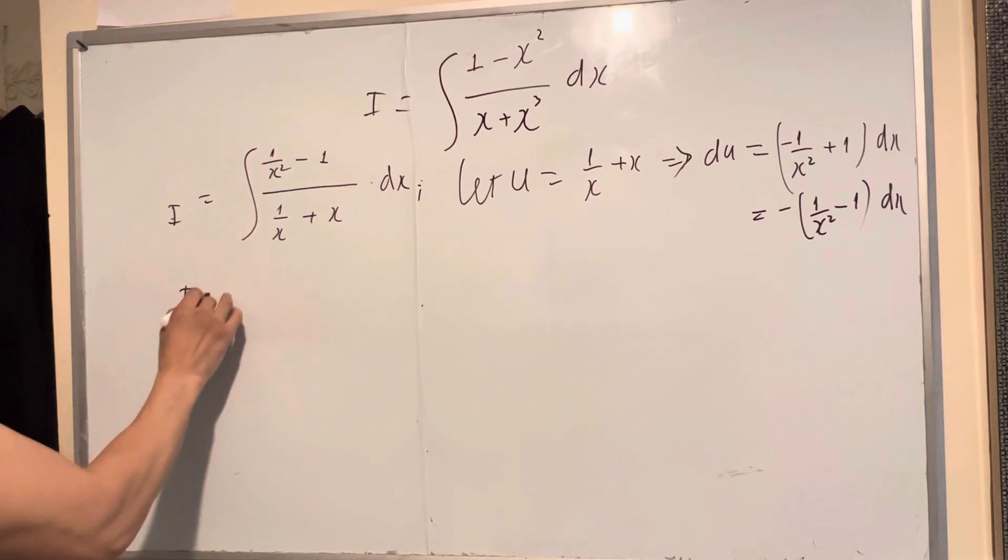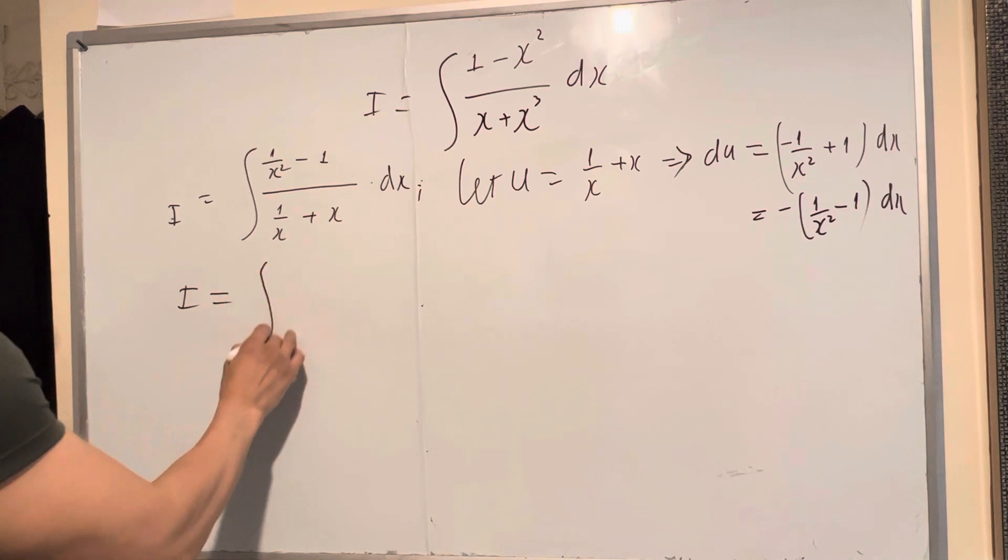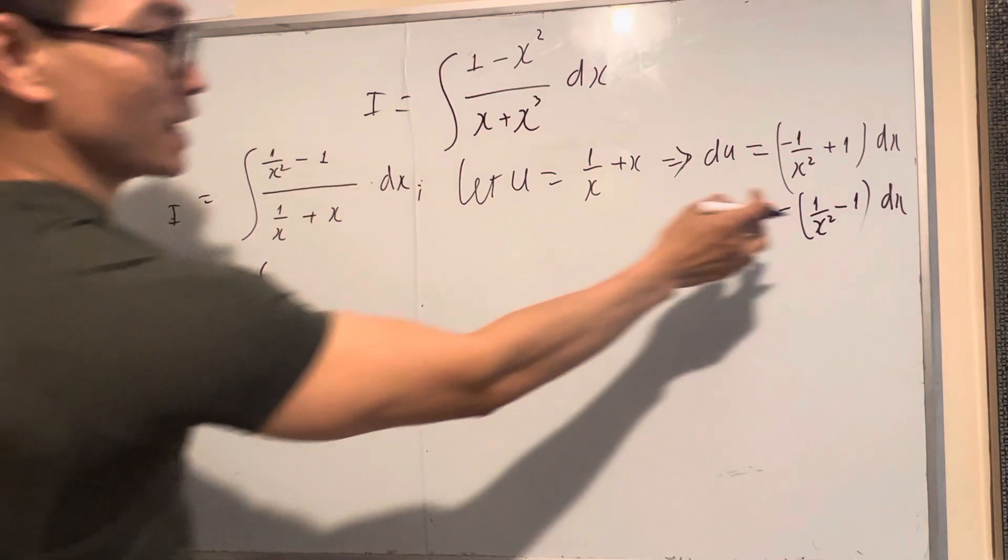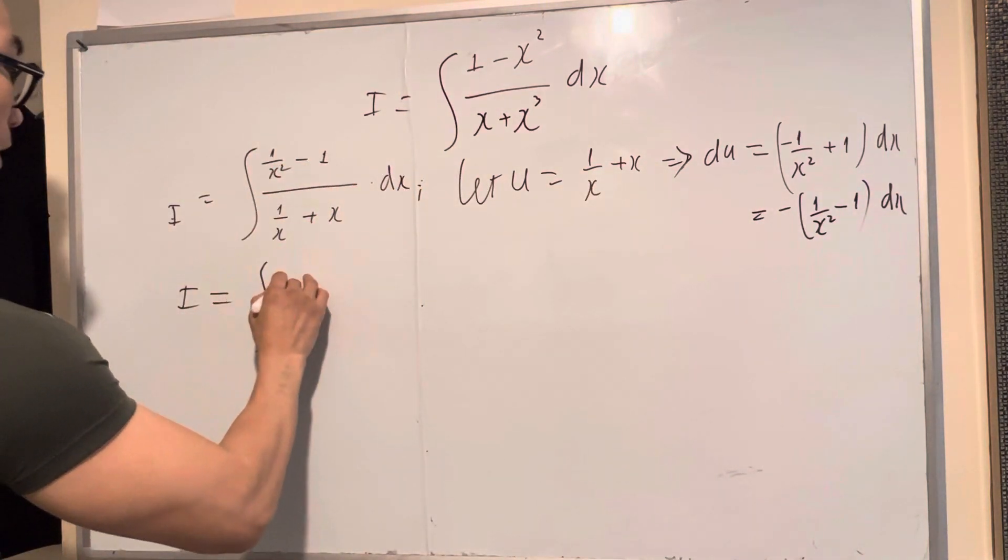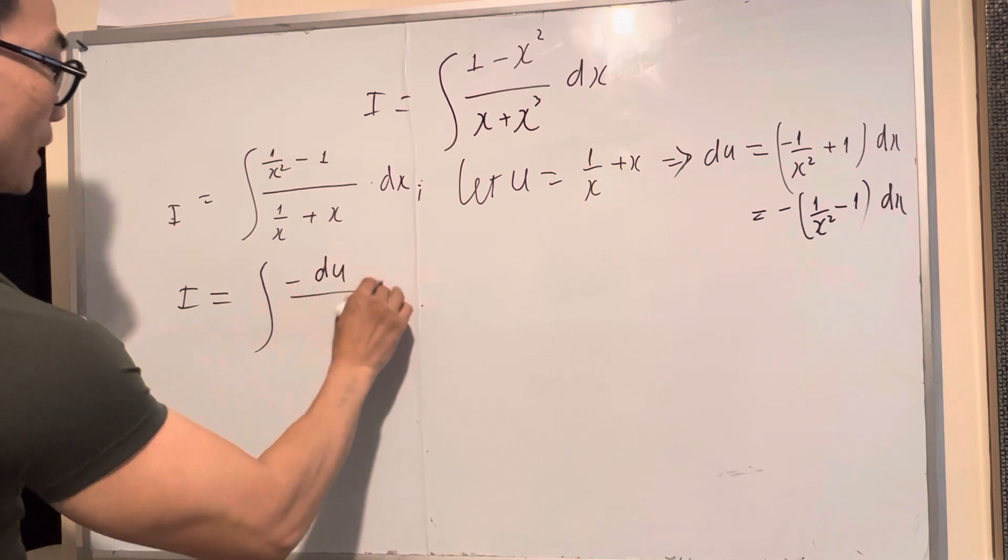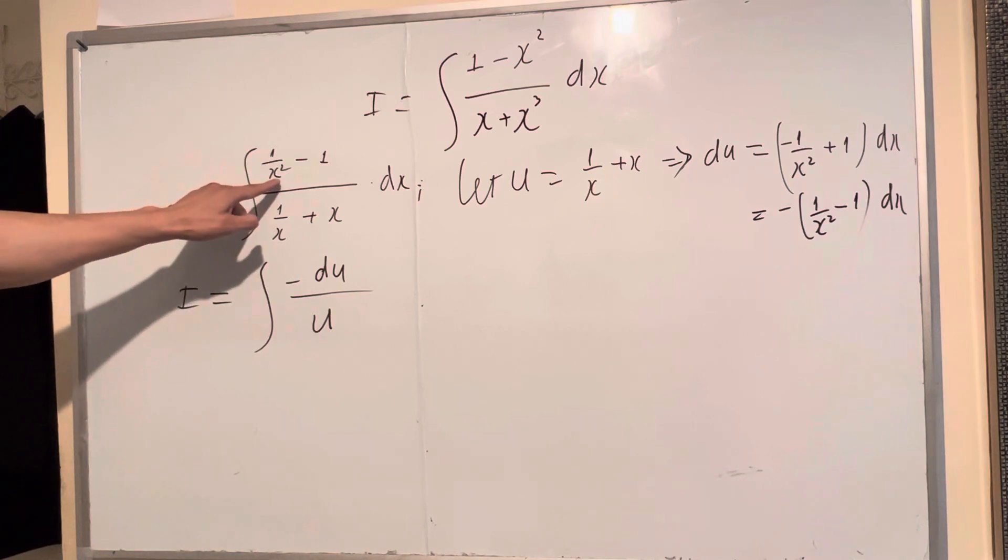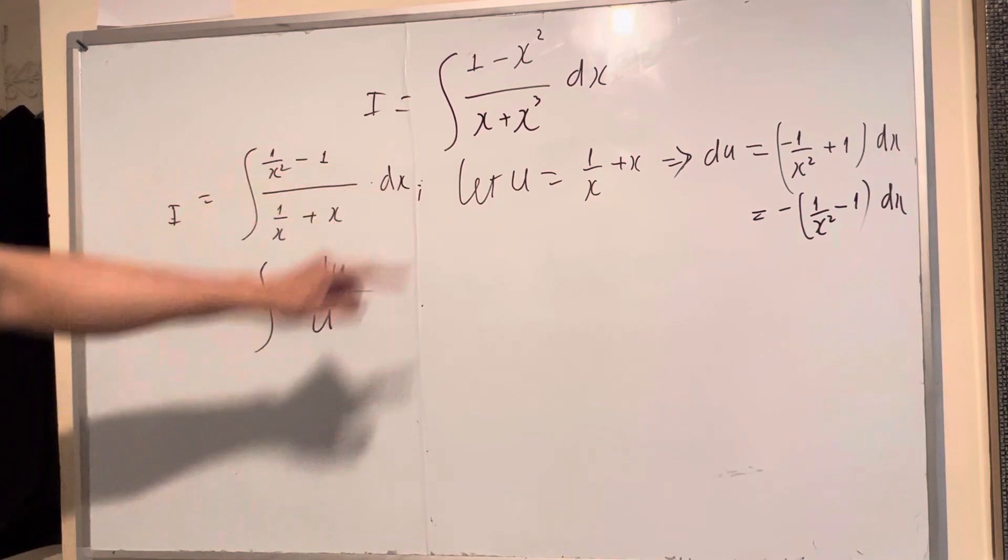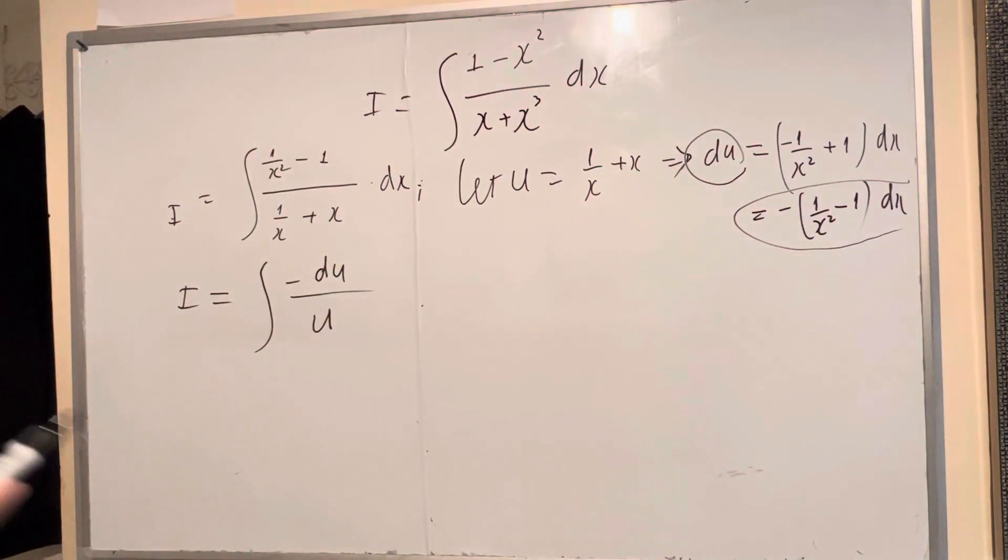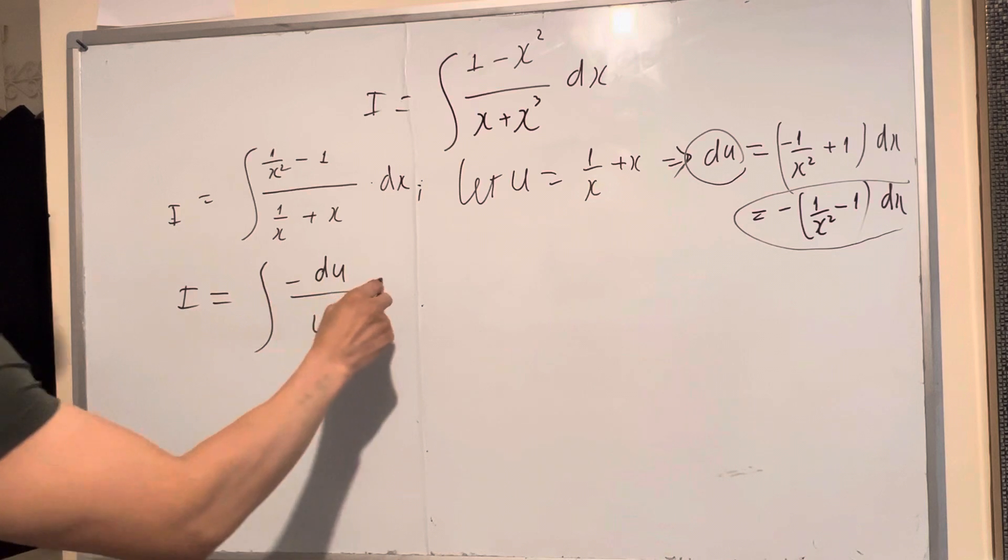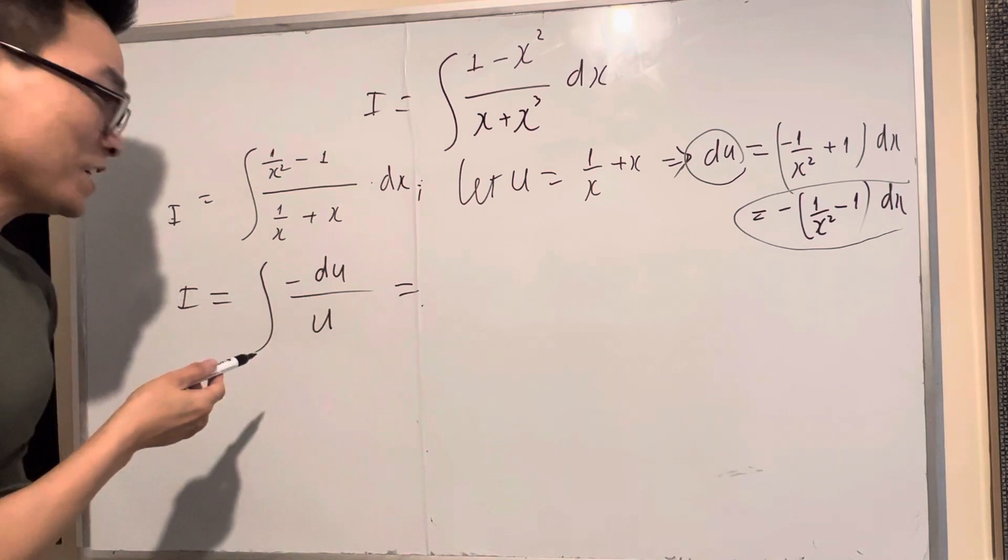Now you have I equals that 1 over x squared minus 1 dx times dx, that's negative du. So negative du divided by u. 1 over x square minus 1 dx, that equals du. So now, very simple, you get du over u.